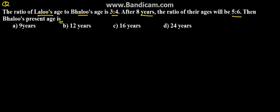Here we are given the ratio of Lalu's age and Balu's age, that is 3 to 4. And we are also given that after 8 years the ratio is 5 to 6. We need to find Balu's present age. The options given are 9 years, 12 years, 16 years, and 24 years.